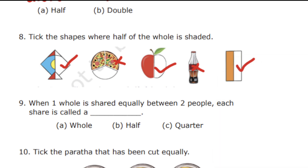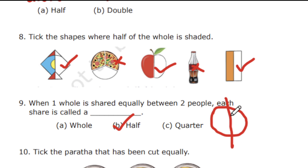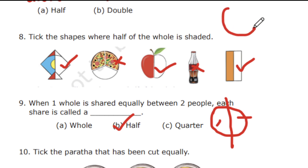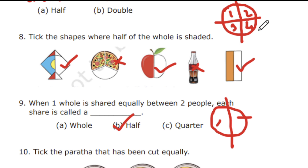30 seconds is over. The correct answer is half. For example, this is a full whole — if we divide it into two equal shares, it is called a half: one half and the second half. If one whole is equally split between four people, each share is called a quarter. That gives us four equal parts: one, two, three, and four — each called a quarter.